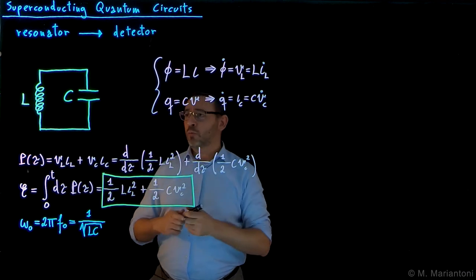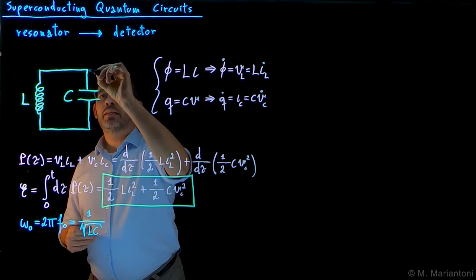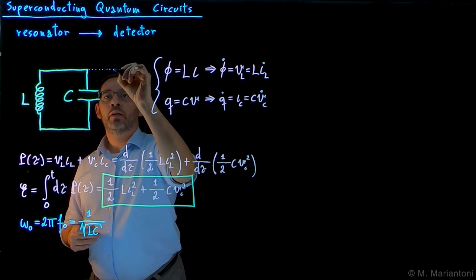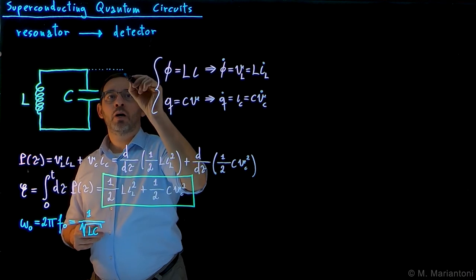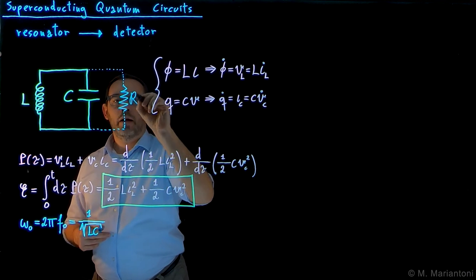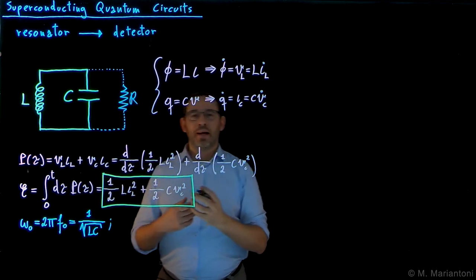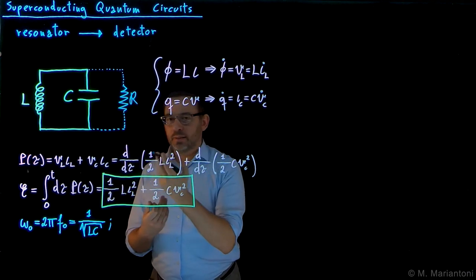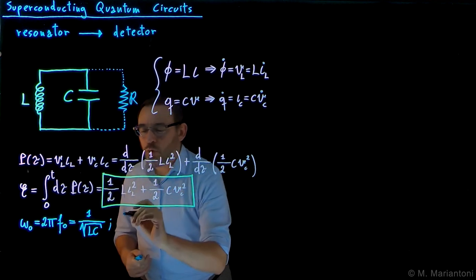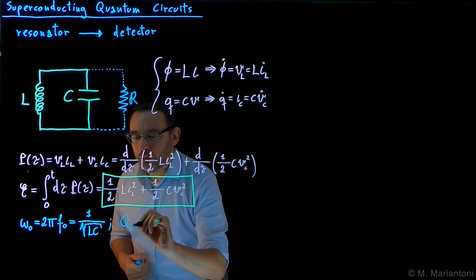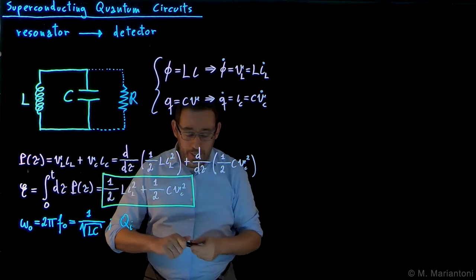In addition, in a previous video, we also studied the case when we add dissipation to this problem in the form of a resistor capital R. In this case, how good the circuit is, the LC resonator, is represented by a quantity which we call the internal quality factor QI. See a previous video on this topic.